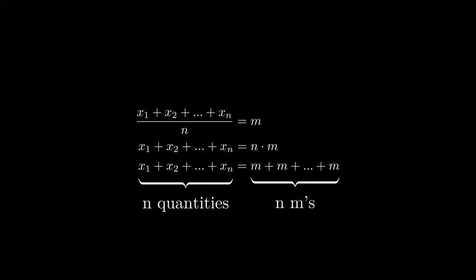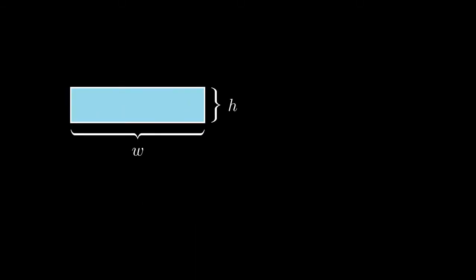When we take the average of a set of numbers, what we are doing is finding a value that can be replaced with each individual value while keeping the sum constant. In that manner, we can think of the geometric mean as the value that keeps the area constant when the geometric mean is replaced with each side length.